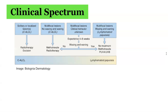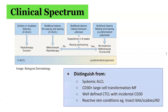Primary cutaneous CD30 positive lymphoproliferative disorders should be differentiated from a number of mimicking conditions, including skin involvement by systemic anaplastic large cell lymphoma, CD30 positive transformed mycosis fungoides, other well-defined types of cutaneous T-cell lymphoma which may incidentally express the CD30 antigen, as well as reactive, often benign skin conditions with infiltrates containing CD30 positive blast cells, including various viral infections, arthropod bite reactions, scabies, and atopic dermatitis.